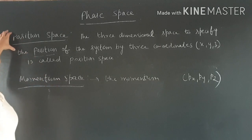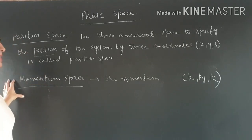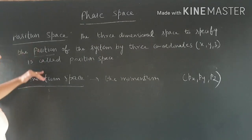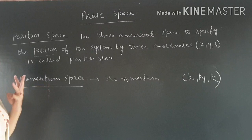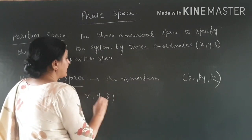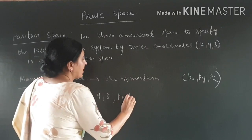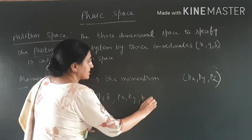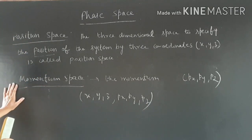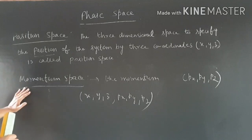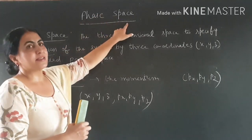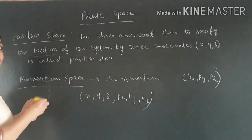So we have two spaces: one is position space and second is momentum space. With these two spaces we have six coordinates: X, Y, Z and Px, Py, Pz. When we combine position space and momentum space, the new space that comes is phase space.